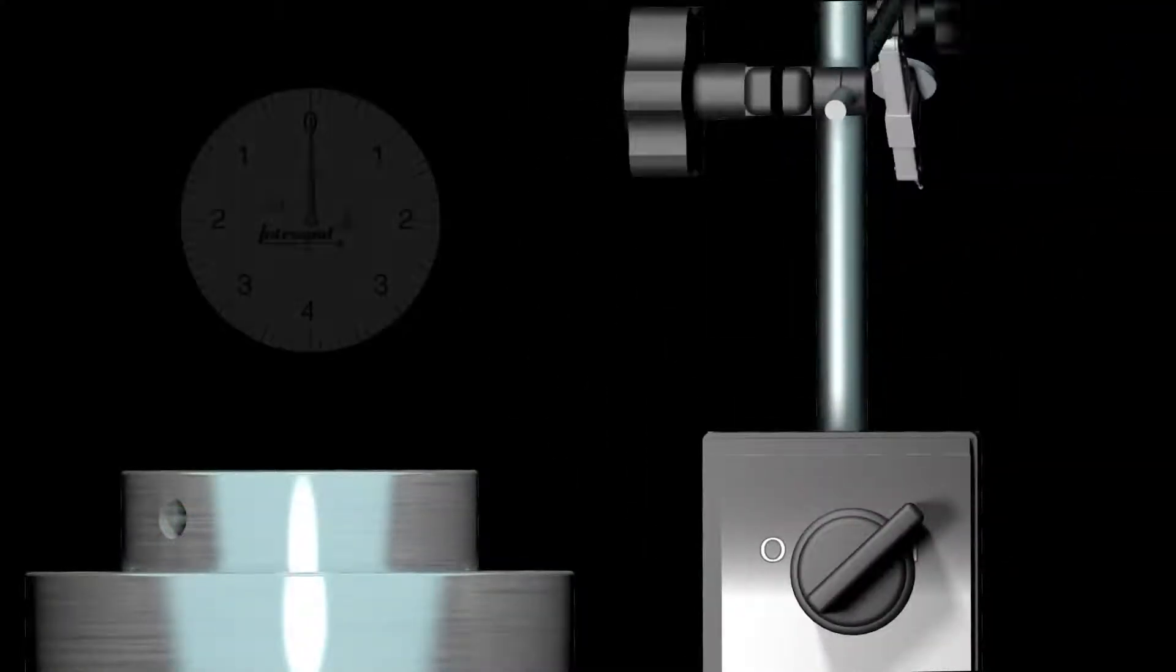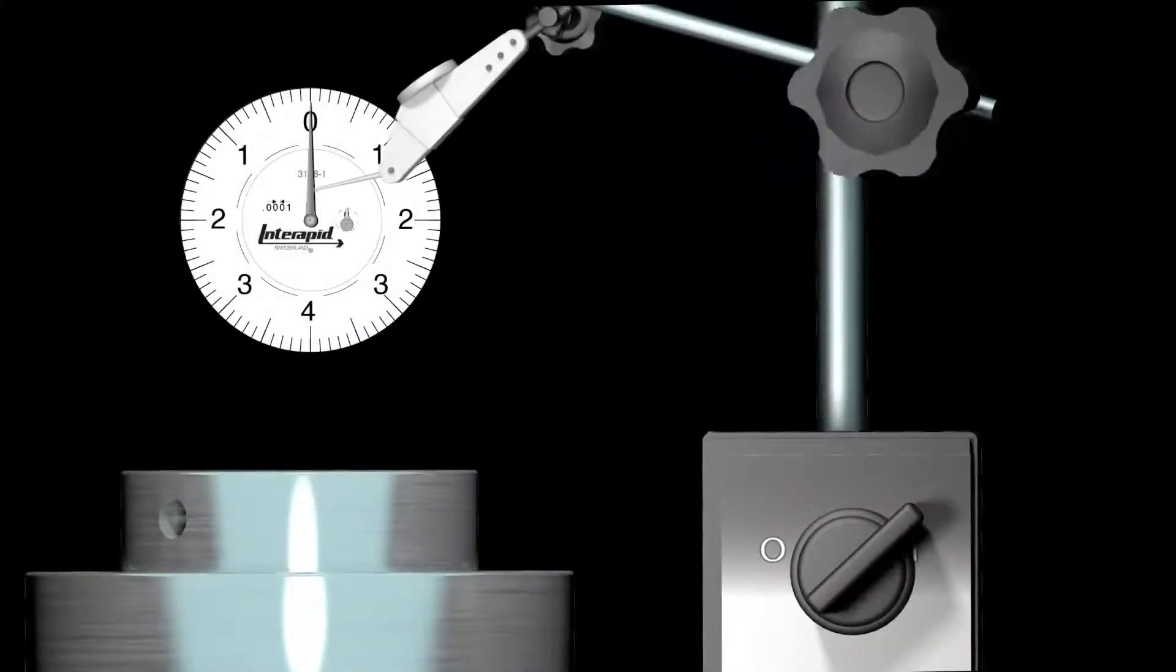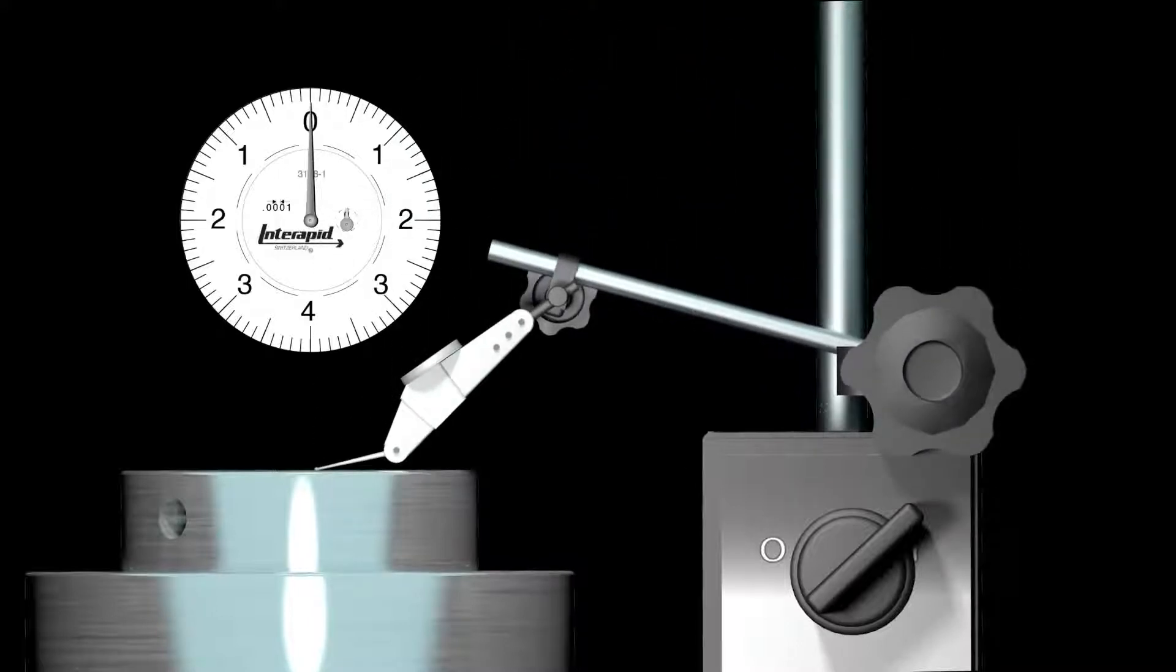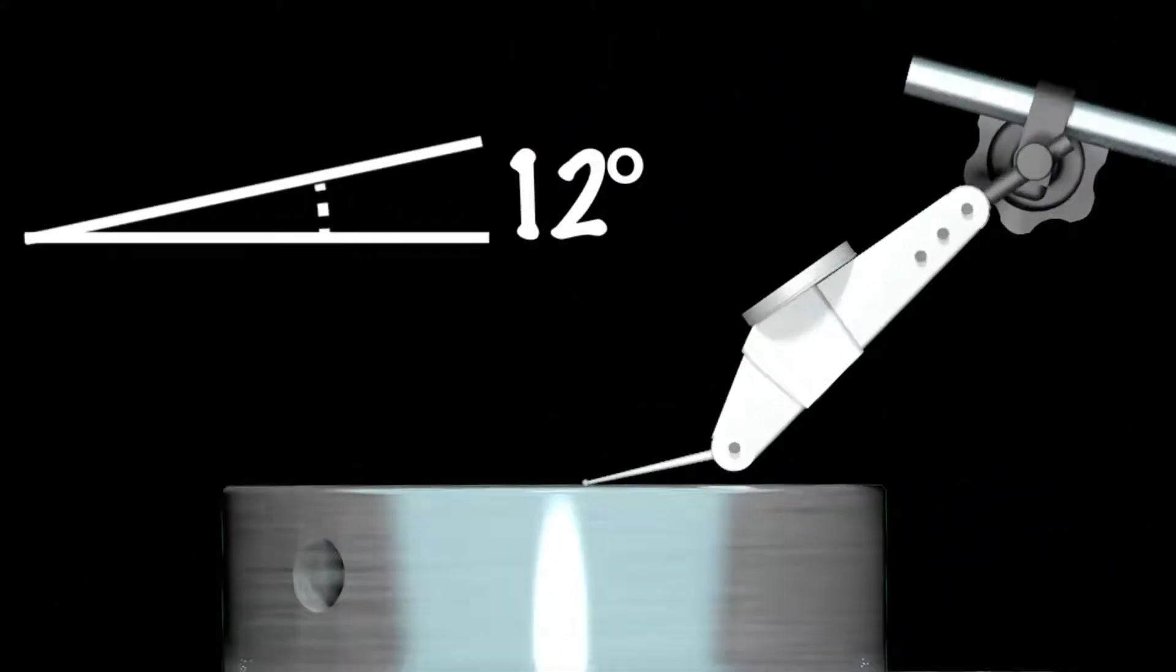So you've got your indicator attached to the mag base. Now if you're using an Interapid indicator like we use here in the Haas factory, you'll need to align the stylus so that it rests at a 12 degree angle to the surface you're indicating. 12 degrees is where these are most accurate.